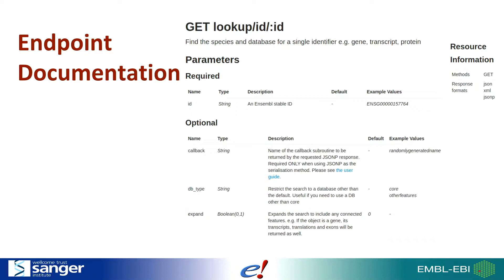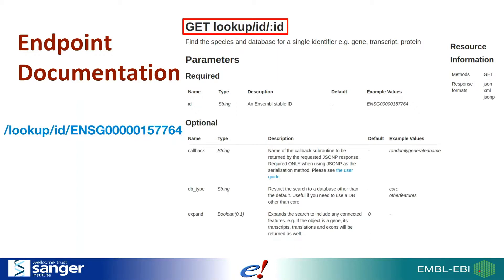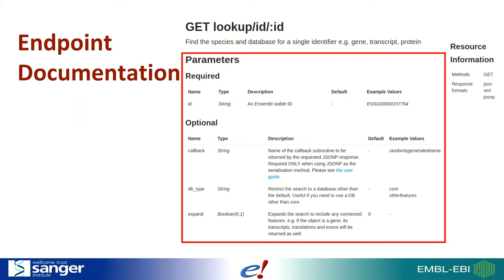By clicking on a particular endpoint, you'll get more details on how to use it. At the top, you'll see the method and the URL of the endpoint. You'll also see any variables you need to provide, denoted with a colon in front of the name. In this case, we're being told the endpoint takes an ID as part of the URL — lookup, then the ID you're looking for. This becomes the URL your software uses or you type into the web browser for testing.